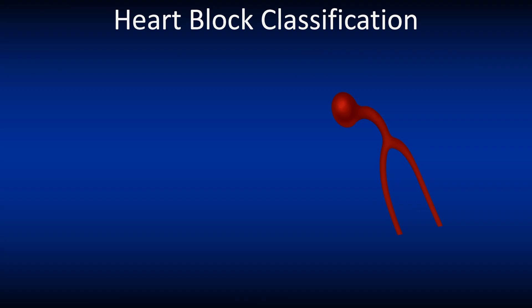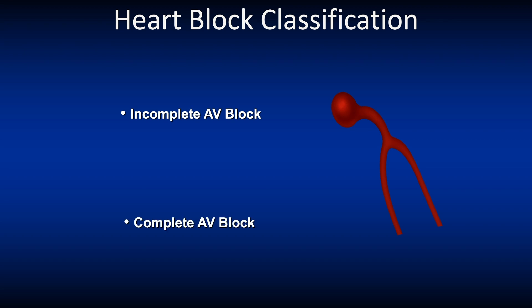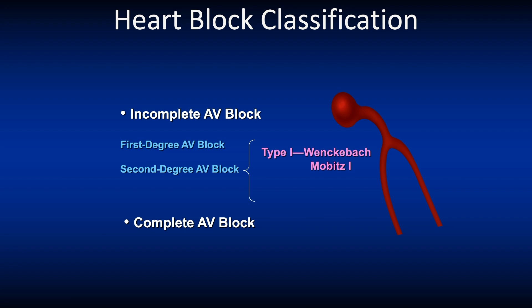Heart blocks can be classified into incomplete and complete AV blocks. Incomplete AV blocks include first degree block and second degree blocks. Second degree blocks can be subdivided into type 1, also known as Wenckebach or Mobitz 1, and type 2 or Mobitz 2. Complete AV blocks include third degree heart blocks.